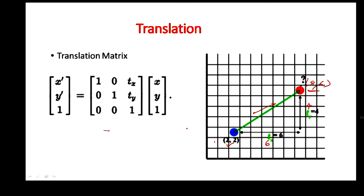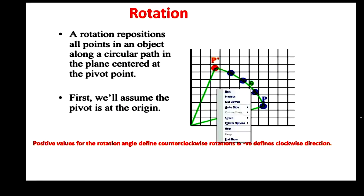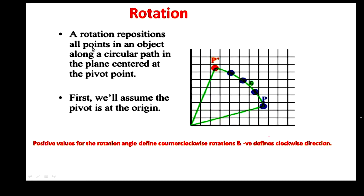This way we have to find how much it is moved in the x axis and how much it is moved in the y axis. The object is moved in both x and y axes and transformed to a particular place. A rotation repositions all the points in an object along a circular path in the plane centered at the pivot point.